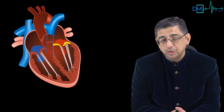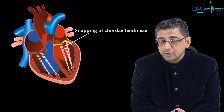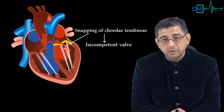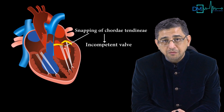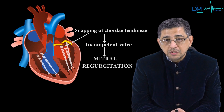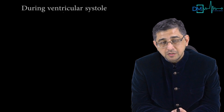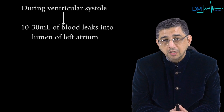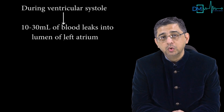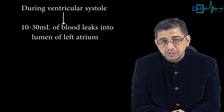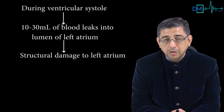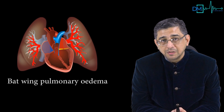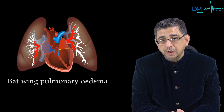The second big problem: if the chordae tendineae snap — due to infective endocarditis, Aschoff nodule damage, or rheumatic fever — you would have an incompetent valve, meaning mitral regurgitation. During ventricular systole, blood leaks into the left atria, causing structural damage to the left atria, left ventricular failure, and pulmonary edema. Blood backs up into the pulmonary circulation, causing orthopnea and paroxysmal nocturnal dyspnea.